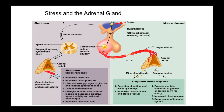Now the adrenal cortex can push out glucocorticoids and mineralocorticoids. The glucocorticoids are cortisol, cortisone, and corticosterone. The mineralocorticoid — mineral meaning sodium — is aldosterone.